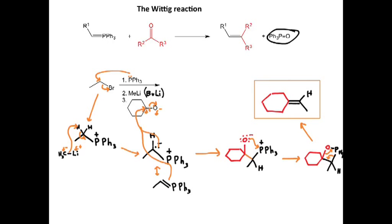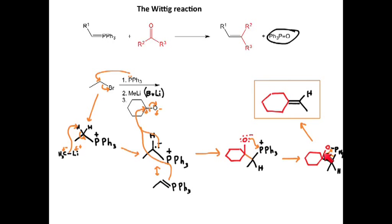To review: steps one and two make our phosphonium ylid. Triphenylphosphine does a substitution reaction — an SN2 — to kick out the Br. We add a very strong base which deprotonates the hydrogen, forming our phosphonium ylid (which can be represented two ways). Our phosphonium ylid attacks the carbon of the carbonyl, forming an O⁻. The O then attacks the phosphorus to get this four-membered ring, and the electrons rearrange to break the carbon-oxygen bond and the carbon-phosphorus bond, leaving us with an alkene and triphenylphosphine oxide.